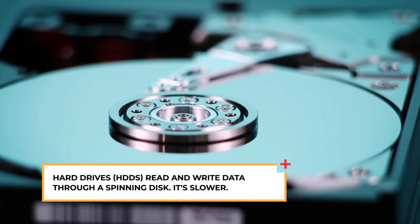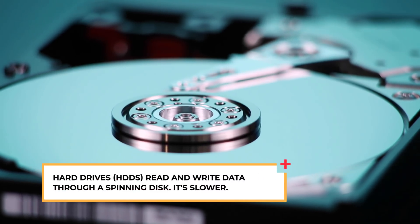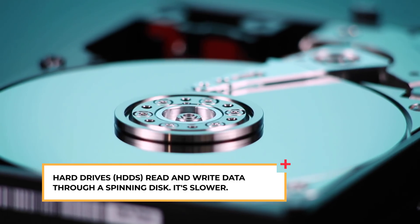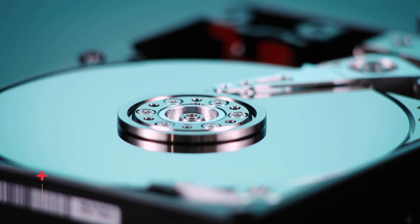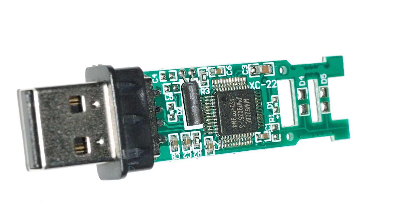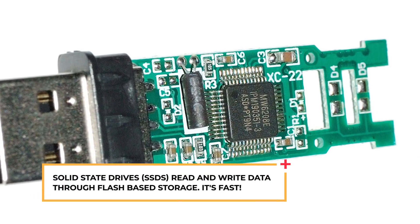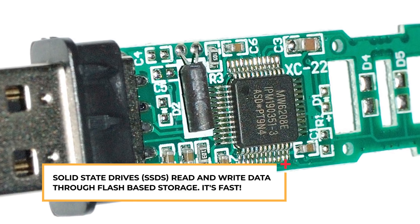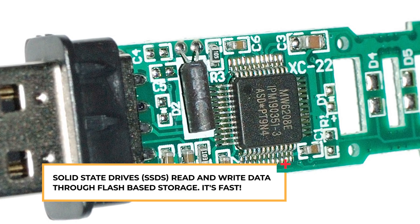So why are solid state drives faster? Solid state drives store data on microchips while hard drives store data on a rotating platter and they use magnetism to read and write data. So every time you request to store or process data on a hard drive it'll spin to read it. A solid state drive simply opens up a file instantly because it has its own processor like a computer and it uses flash-based memory to process data.